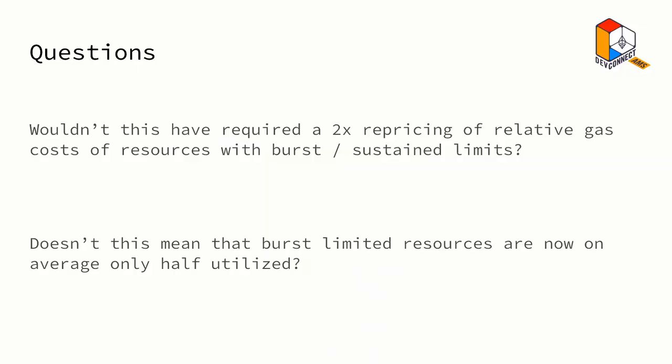If you followed along, there might be two questions. First: if you decouple the burst and sustained limits, wouldn't that have required a repricing of resources by roughly 2x against each other? Second: doesn't that mean all burst-limited resources are on average only half utilized — isn't that an efficiency loss? For the first question, it just turns out there was another coincidence. We had a mechanism called refunds in Ethereum that already had basically the same property that individual blocks could be 2x the total throughput. At the same time we introduced the 1559 mechanism, we removed refunds, so we didn't have to deal with any repricing. We just got lucky.